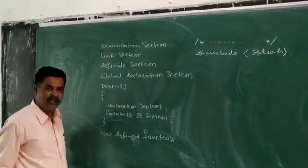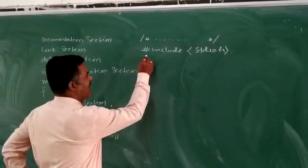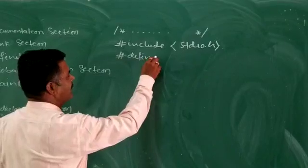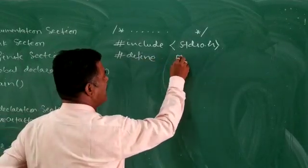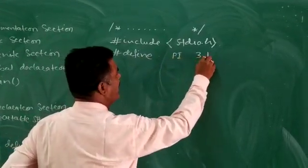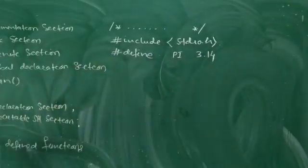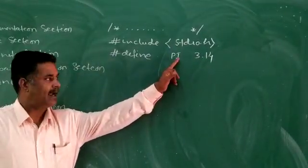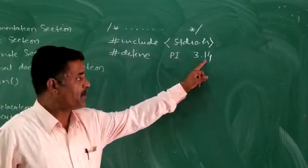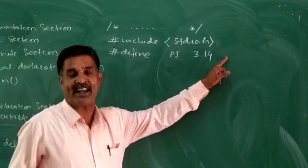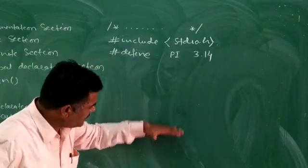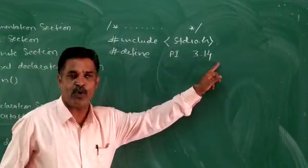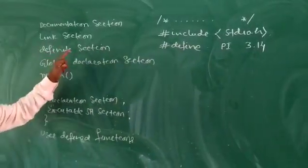The define section is another preprocessor directive using #define. For example, #define PI 3.14. This stores symbolic constants, variable values, or expressions. Whenever PI occurs in the program, its value is restored. This is called the define section.